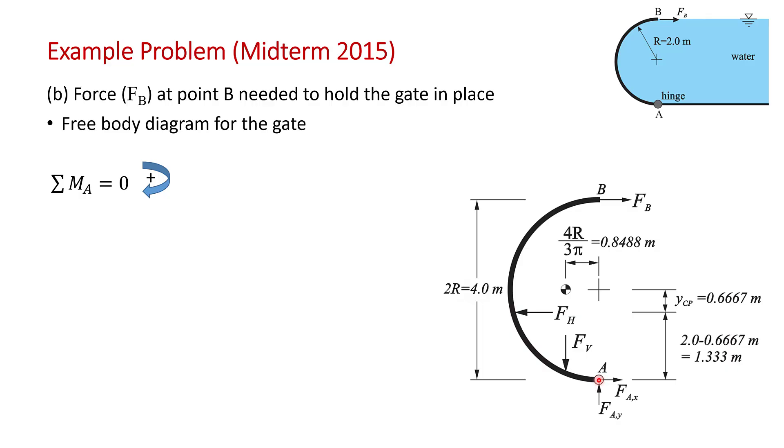We use point A because we want to avoid having to calculate these hinge forces. So we take the moments about A and I've taken clockwise as positive. So FB has a clockwise moment and FH and FV have negative moments. This is basic statics. FB times 2R, that's the moment arm, equals FH.